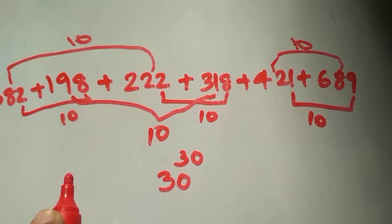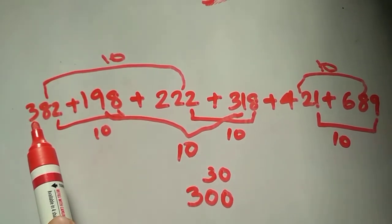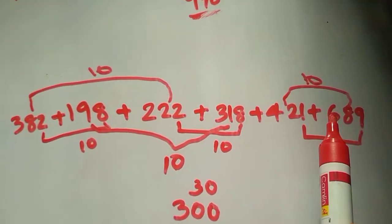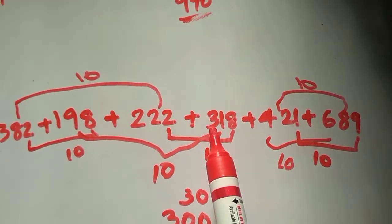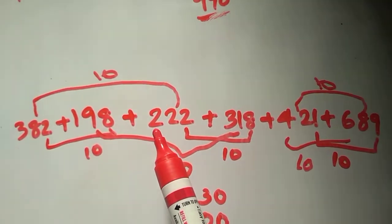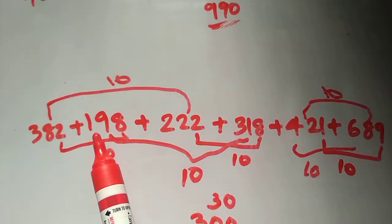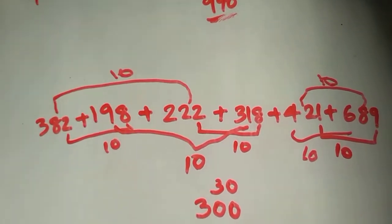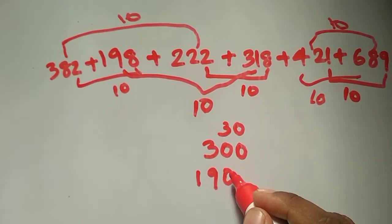The sum of 10's digits gives 300. Then we move to 100's digits: 6 and 4 are complements giving 10. The remaining digits are 3, 2, 1, 3 with no further complements. So: 10 plus 3 is 13, plus 2 is 15, plus 1 is 16, plus 3 is 19. Since these are 100's digits, we add two zeros: 1900.